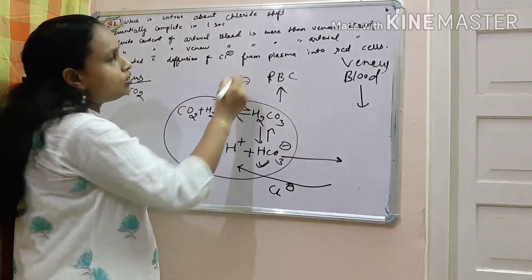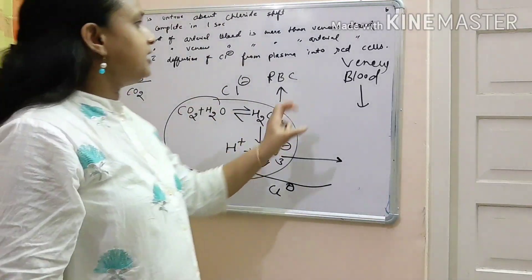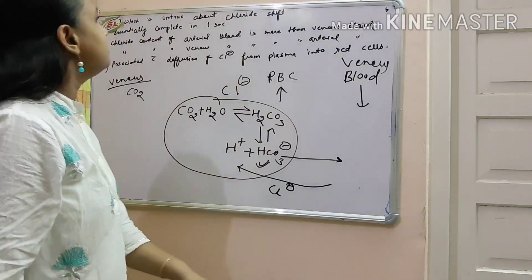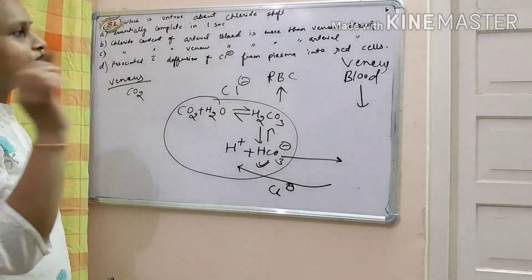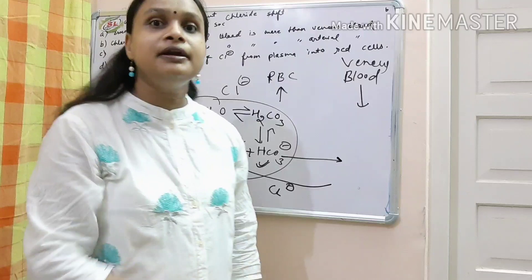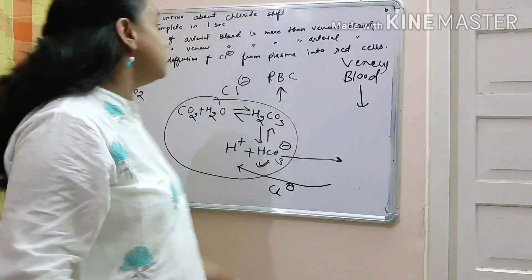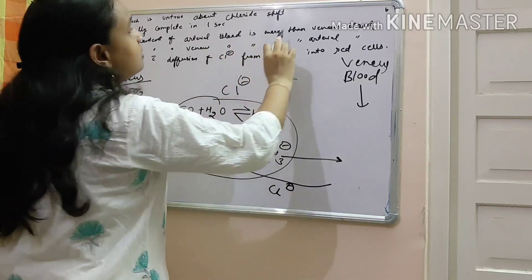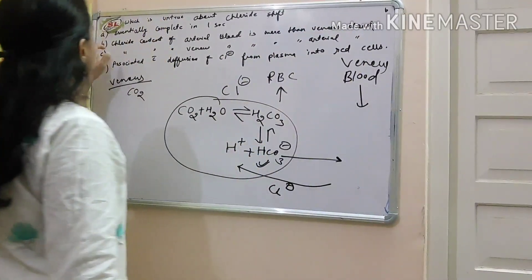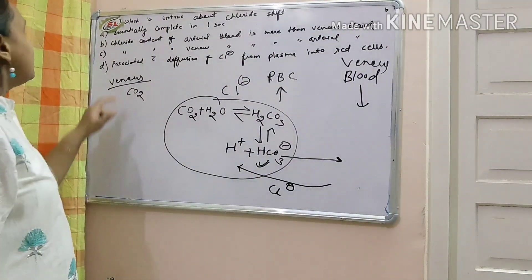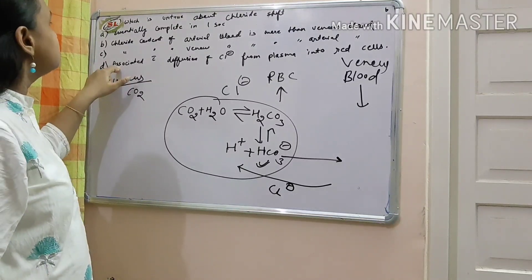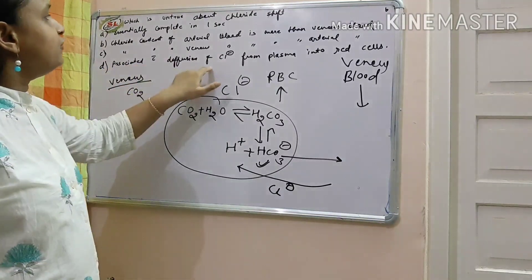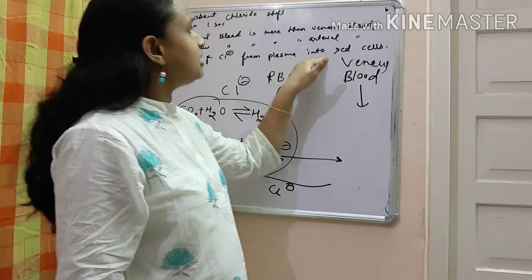So chloride concentration in the venous blood is going down. So chloride content of arterial blood would be more than the venous blood. So chloride content of arterial blood is more than venous blood. This is true option.